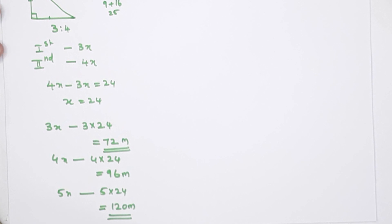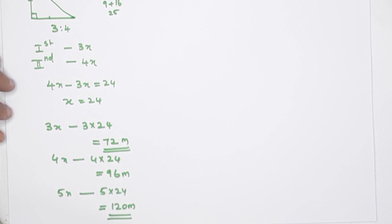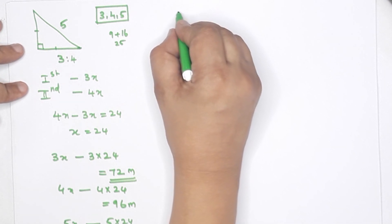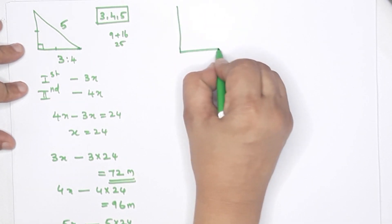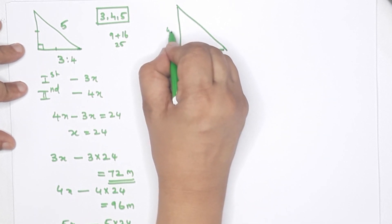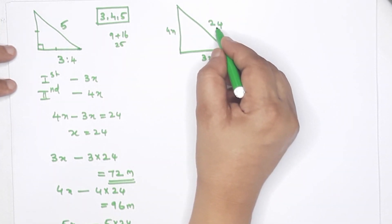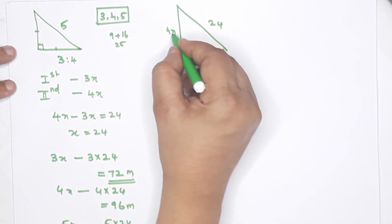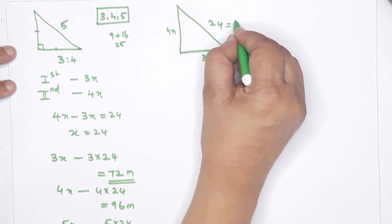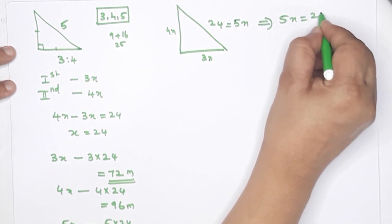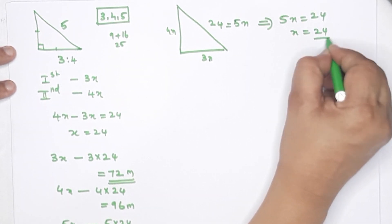Second part: the hypotenuse is 24 meters. The sides are 3x, 4x, and 5x. Since hypotenuse is 5x, we have 5x equals 24, so x equals 24 by 5, that is 4.8.